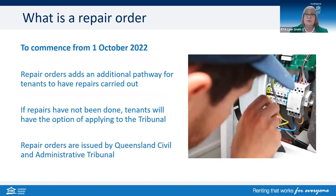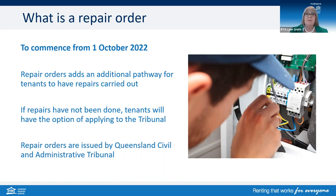From 1 October 2022, the new repair orders allow an additional pathway for tenants to have repairs carried out. They will be able to apply to the Tribunal — the Queensland Civil and Administrative Tribunal or QCAT — if repairs have not been done. This will apply to routine repairs and emergency repairs. For routine repairs, the process requires the tenant to first inform the owner or agent of the repair, whether by email, maintenance request, or breach notice. If the repair wasn't made in a reasonable time, it is a non-urgent application, so they need to go through dispute resolution at the RTA first before applying to the Tribunal.